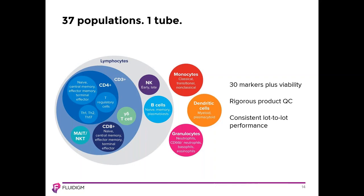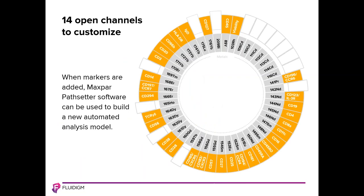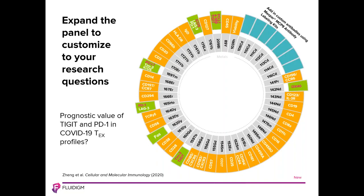Another way to look at the markers in this panel kit is to arrange them by the metal to which they are conjugated. Doing this enables you to see which metals or channels are available to add markers. When markers are added to the panel, the Maxpar Pathsetter software can be used to build a new automated analysis model. Customization of the Maxpar Direct Immune Profiling Assay allows you to expand the panel to customize your research questions.